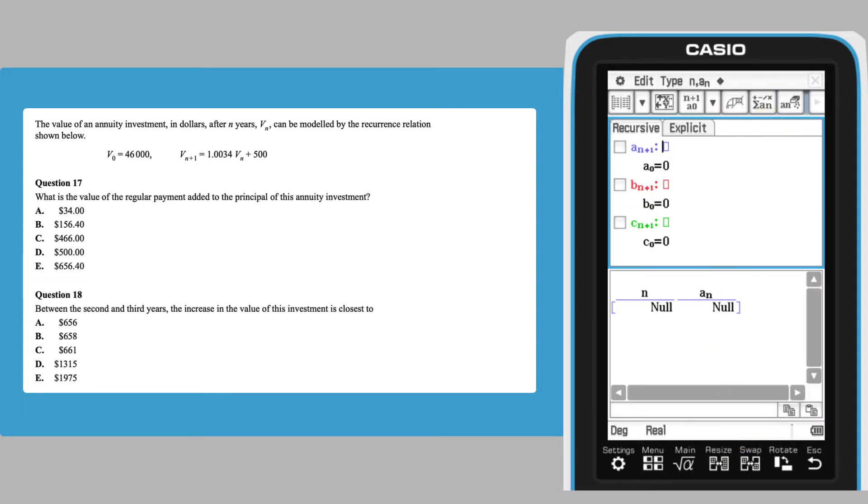Enter the recursive rule for AN plus 1 using the NAN drop-down menu to enter AN. Enter the initial value of the investment, A0.